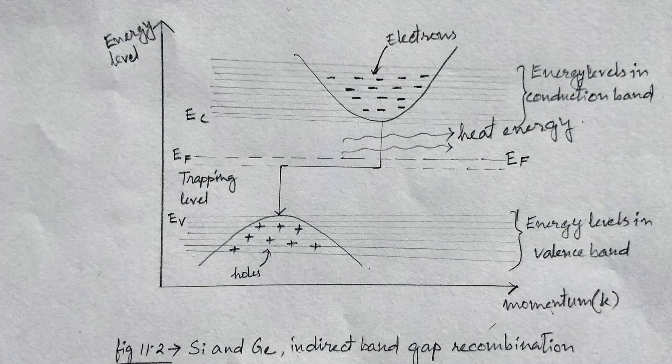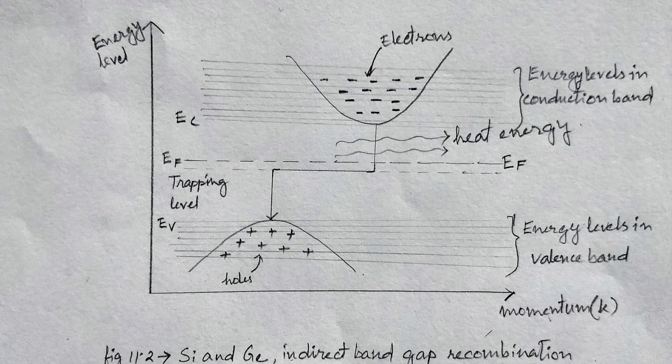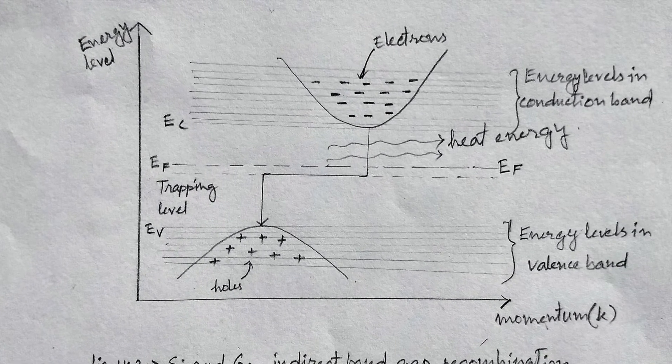In the case of silicon and germanium, most of the released energy is dissipated in the form of heat.